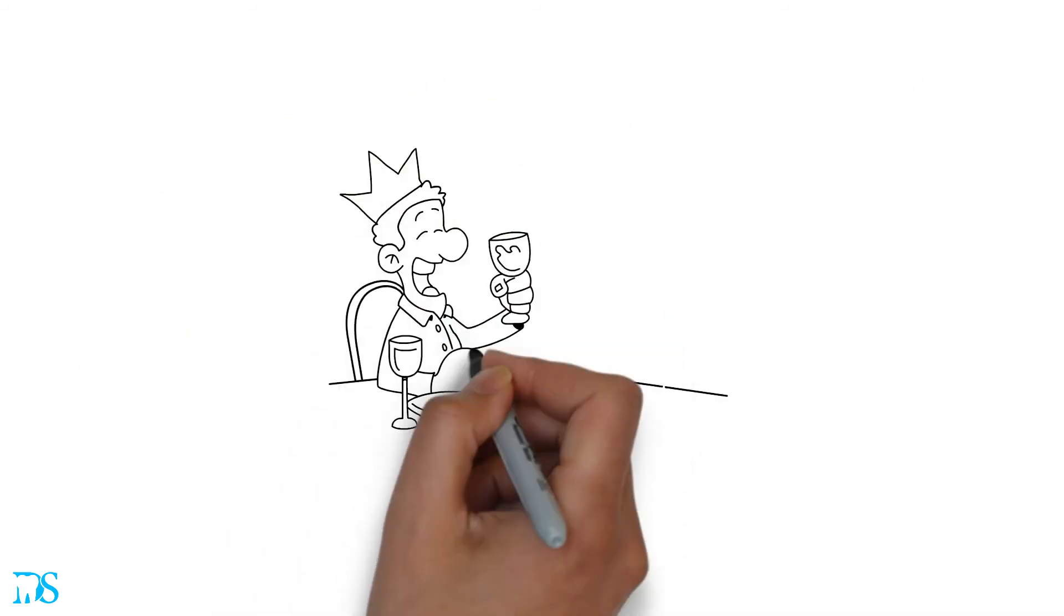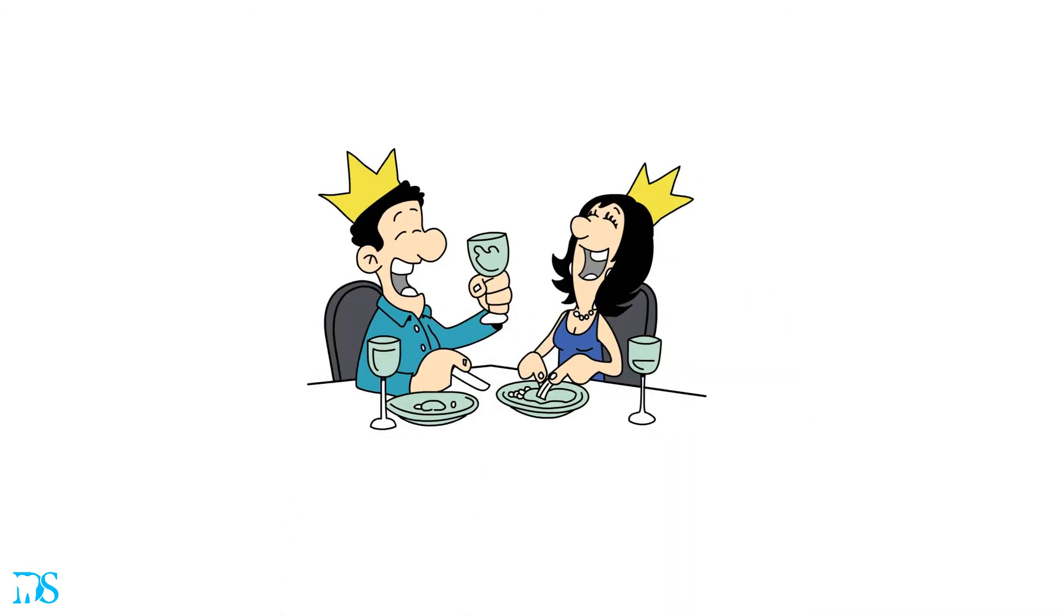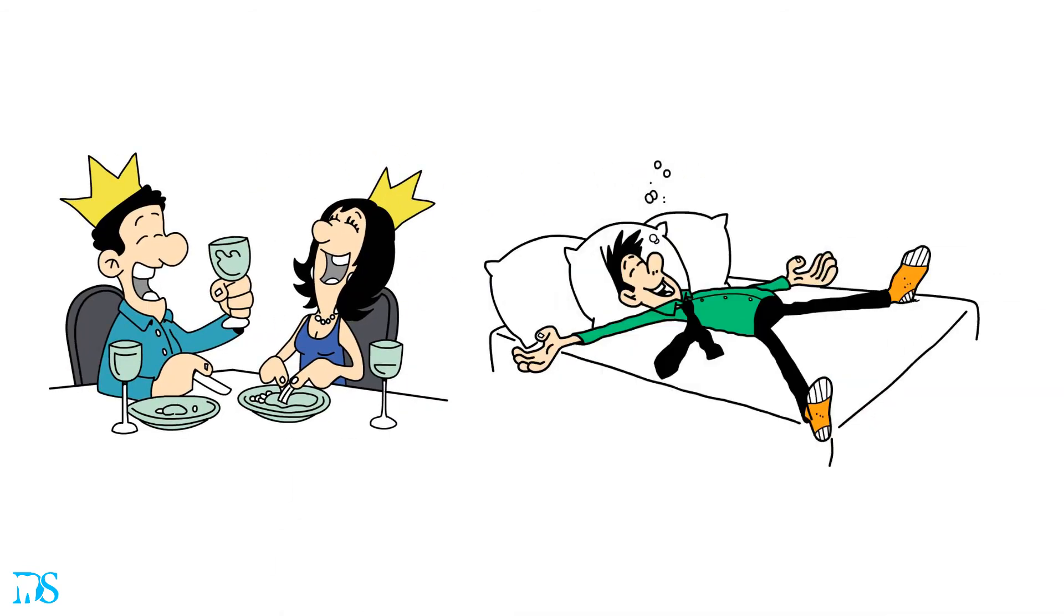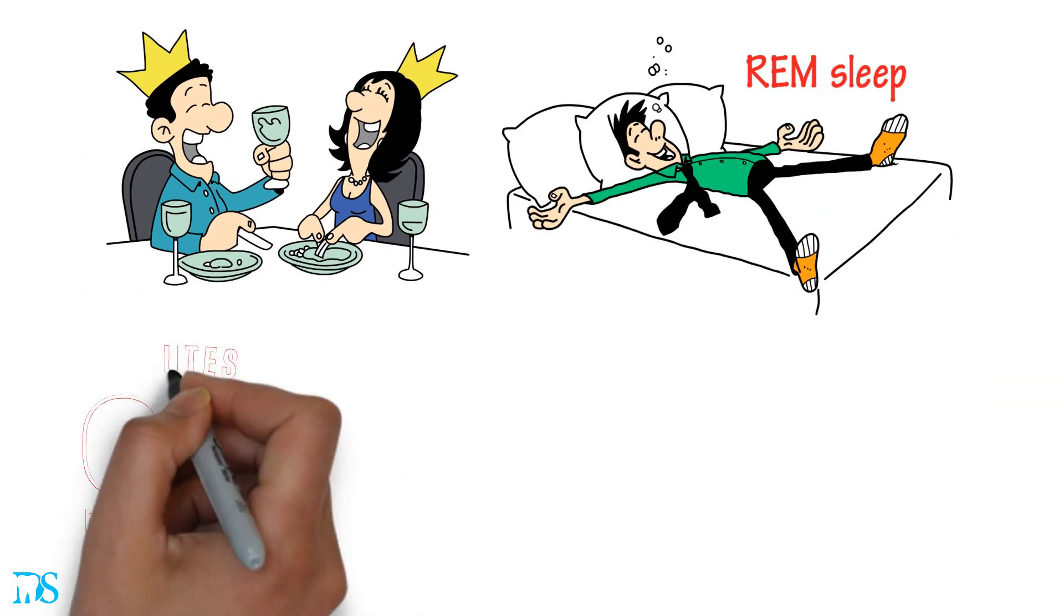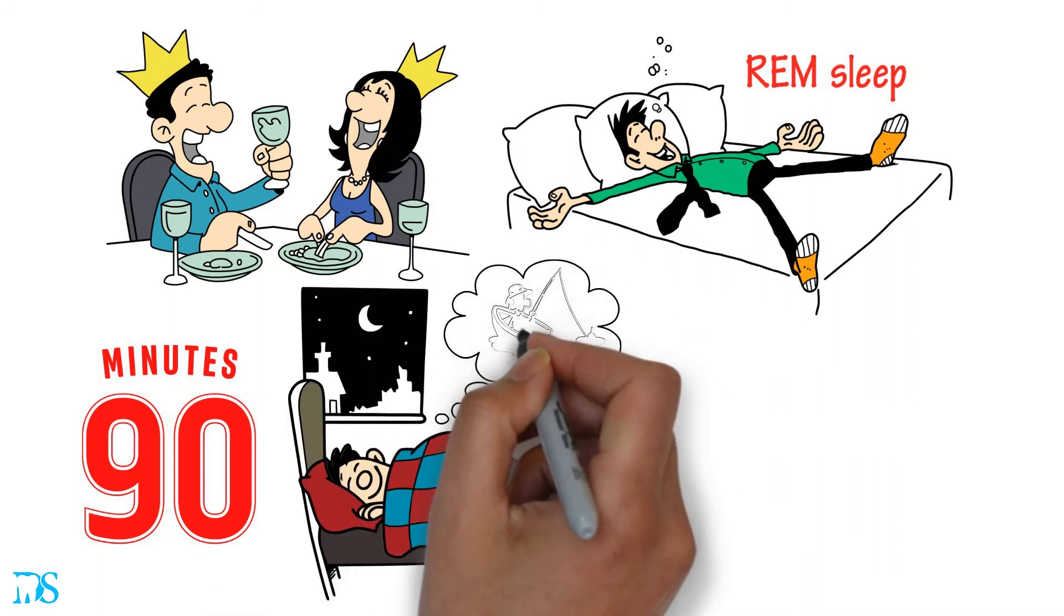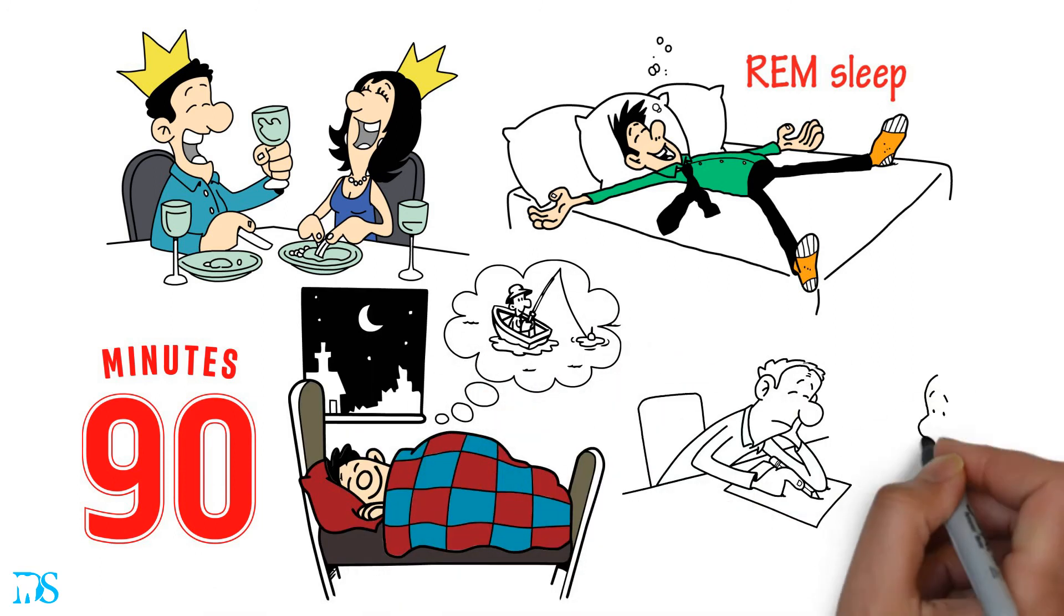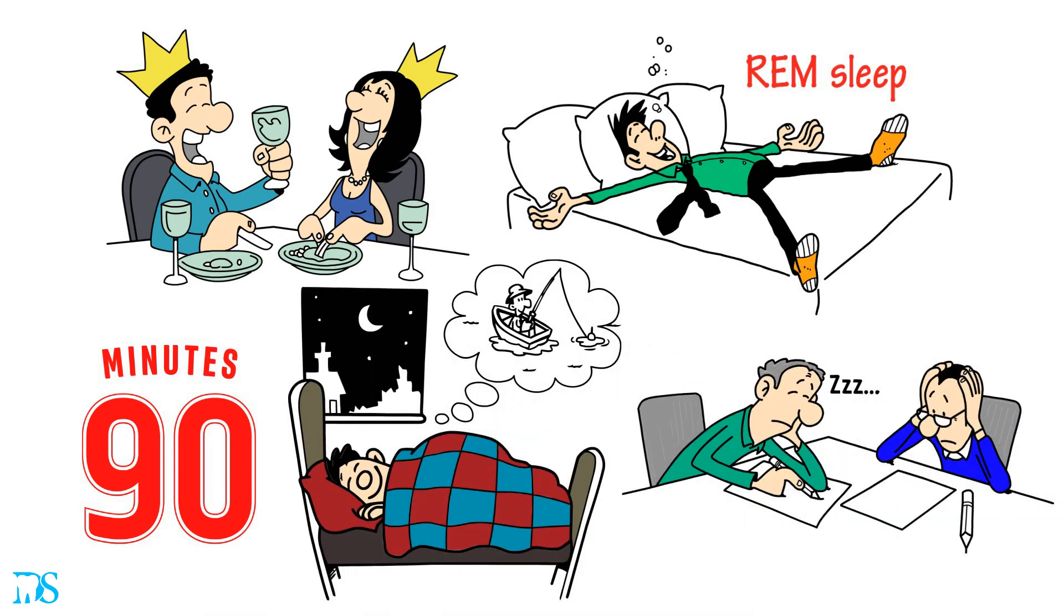Those glasses of wine before bed may also be making you more tired the next day. While alcohol may help you fall asleep faster, it ultimately reduces the amount of REM sleep you get. REM sleep happens about 90 minutes after you fall asleep, and it's where dreaming occurs. Disruptions here can cause daytime drowsiness and a decrease in concentration.